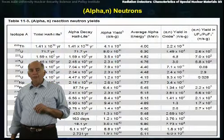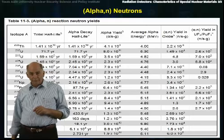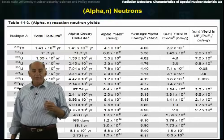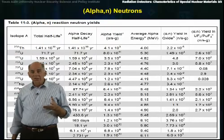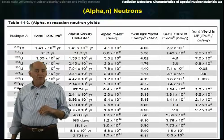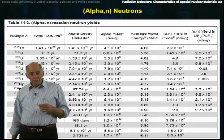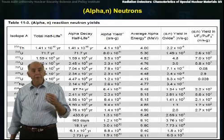Another way to get neutrons from the higher actinides is from the alpha-N reaction. Remember that the most likely form of decay for these actinides is alpha decay. The range of these alpha particles in most actinide matrices is to the order of a few tens of micrometers. Some of these alphas can interact with the nucleus of the neighboring actinides in the matrix and produce neutrons.